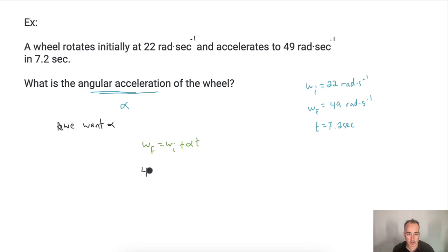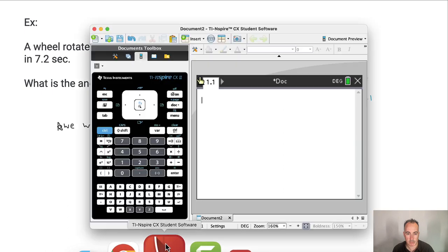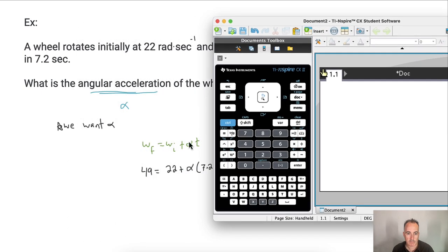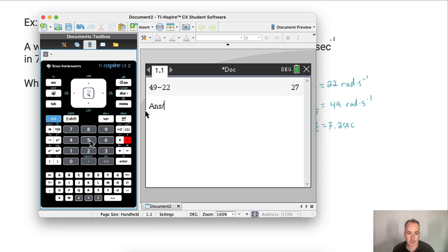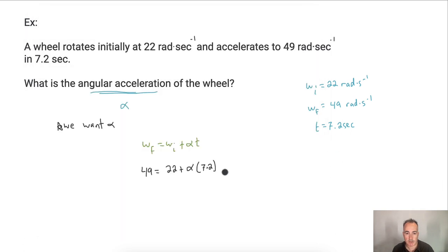And it's just as easy as just putting in your substitutions now. So I know this is 49. And everything here has proper units, so we're fine here. Equals 22 plus in parentheses here. Well, actually, we're looking for alpha, aren't we? Alpha times 7.2. All right. So to do this, then I'm just going to do 49 minus 22. I'll do this on my calculator. So I'm going to do 49 minus 22, because that's going to give me at least the left side here. I want to divide that by 7.2. That's going to give me alpha.